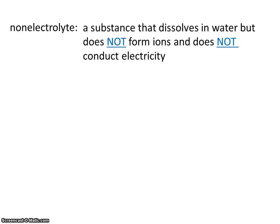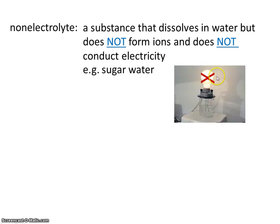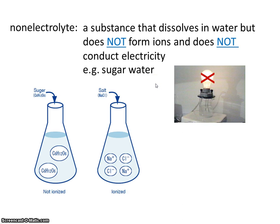A non-electrolyte is a substance that dissolves in water but does not form ions and does not conduct electricity. For example, sugar water does not cause the light bulb to light up. When we put sugar in water, the sugar still dissolves — it does not split up into positives and negatives — and therefore does not conduct electricity.